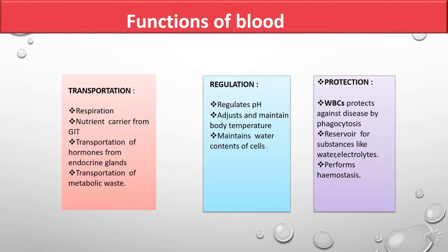Blood has several functions, but three are most important: transportation, regulation, and protection. The first important function is transport — blood helps transport various substances from one part to another part of the body, especially respiratory gases: oxygen and carbon dioxide.